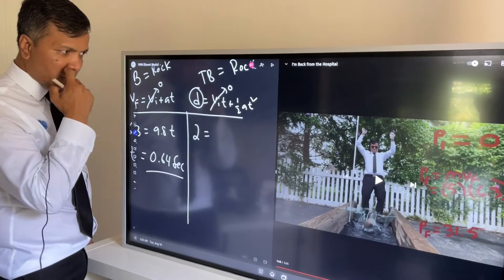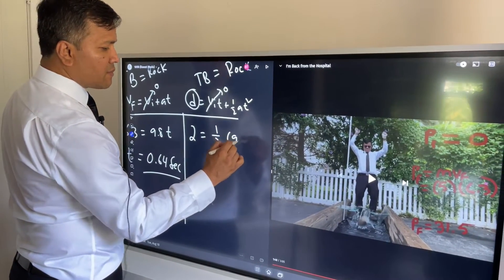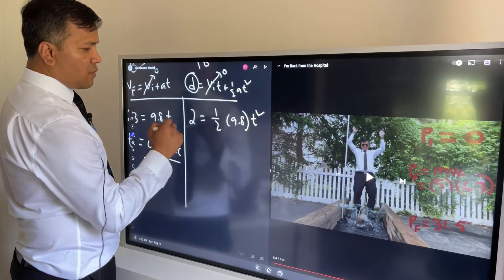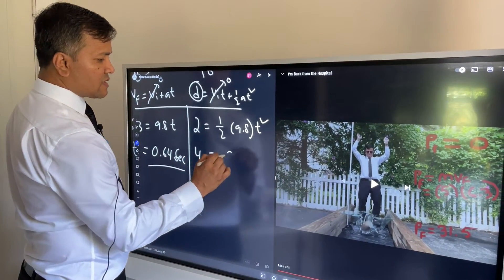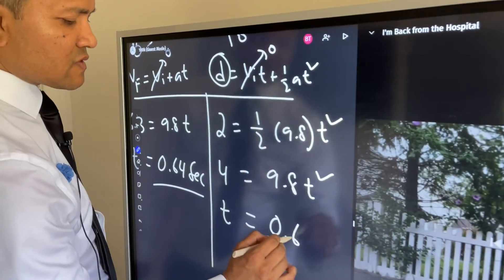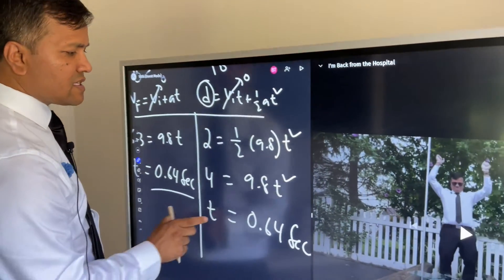If we multiply both sides by 2, we get 4 = 9.8t^2, and then t = 0.64 seconds.